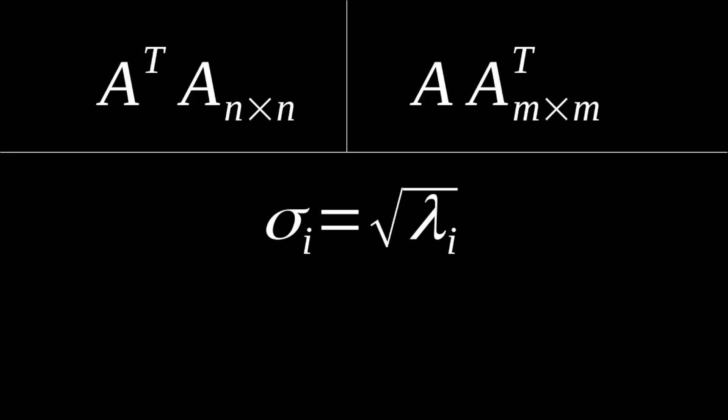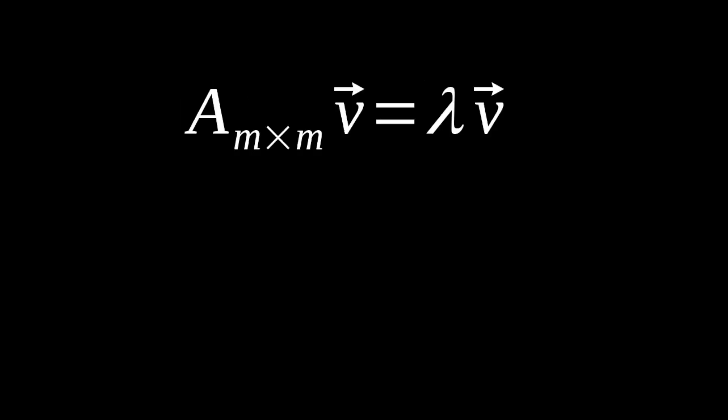To get the singular values, we will just take the eigenvalues we compute and take the square root of them. The square root of the eigenvalues of A transpose A or A by A transpose will just be a singular value. But to better understand this, we're going to need to take a quick detour and review some of our understanding about eigenvalues and eigenvectors.